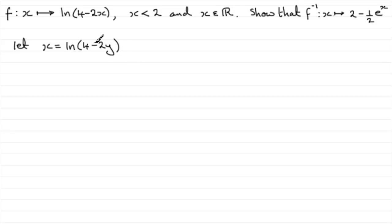Now, what we need to do is rearrange this and make y the subject. So, if we anti-log this, get rid of the natural log, then what we have is that, therefore, e to the power x equals 4 minus 2y.